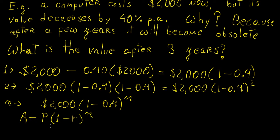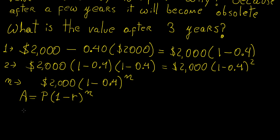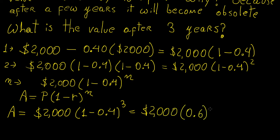So in this case, if we use that formula, what is the value after three years? All we need to do is say, okay, so the value after three years is going to be 2,000 times 1 minus 0.4 raised to the power of 3, which is 2,000 times 0.6 raised to the power of 3. And let's put that in our calculators to see what that gives us. And that's going to be $432.